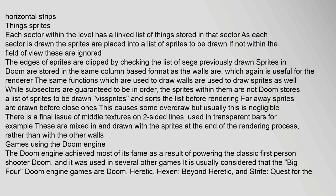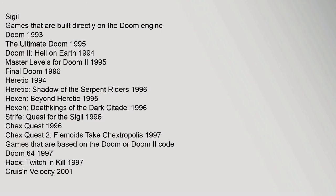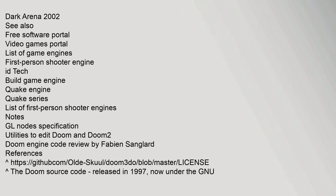The Doom engine achieved most of its fame powering the classic first-person shooter Doom, and was used in several other games. The big four Doom engine games are considered to be Doom, Heretic, Hexen: Beyond Heretic, and Strife: Quest for the Sigil. Games built directly on the Doom engine include: Doom (1993), The Ultimate Doom (1995), Doom 2: Hell on Earth (1994), Master Levels for Doom 2 (1995), Final Doom (1996), Heretic (1994), Hexen: Beyond Heretic (1995), Strife: Quest for the Sigil (1996), HACX: Twitch and Kill (1997), and Chex Quest (1996).